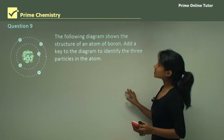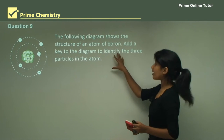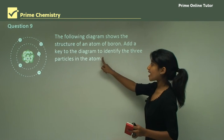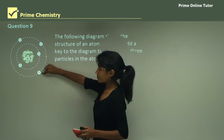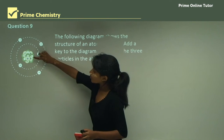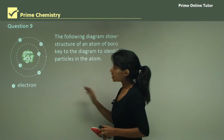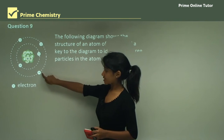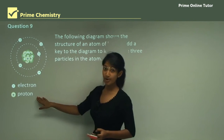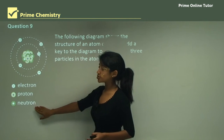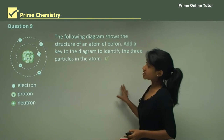Question nine: the diagram shows the structure of an atom of boron. Add a key to identify the three particles. We have a particle with a minus sign outside the nucleus, a particle with a positive sign inside the nucleus, and a green particle inside the nucleus. The negative one is the electron — negatively charged, orbiting the nucleus. The positive one is the proton. The green one is the neutron, inside the nucleus along with the three positively charged protons.